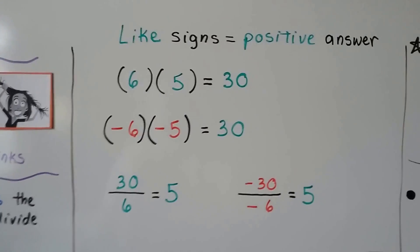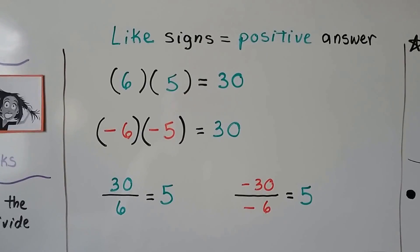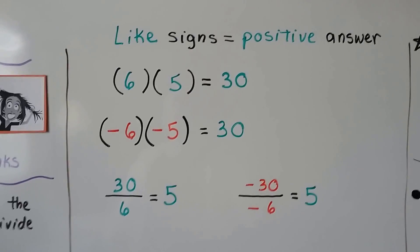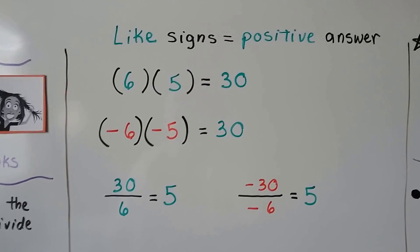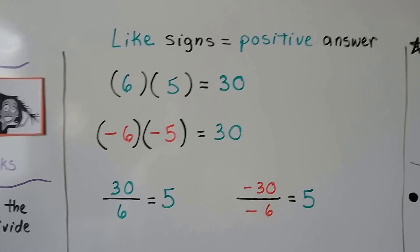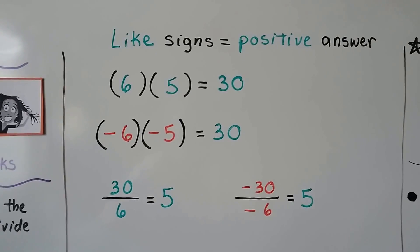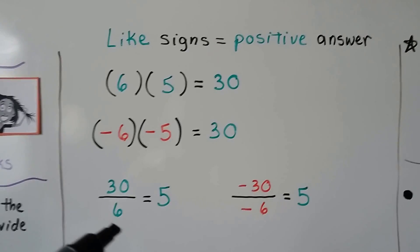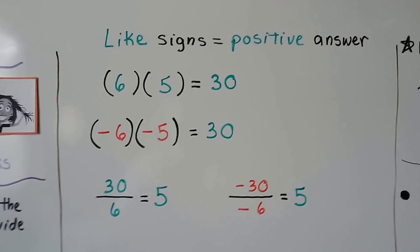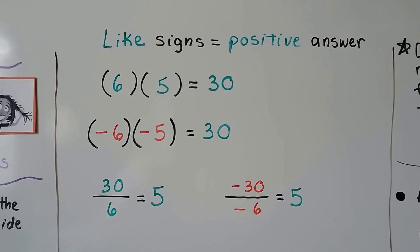Here are some like-sign examples. Positive 6 and positive 5 multiplied together gives us a positive 30. And if we have negative 6 and negative 5, those are like signs, so we're going to have a positive 30 still. In division: both positive gives a positive answer; both negative also gives a positive answer — they're like signs, so we get a positive answer.